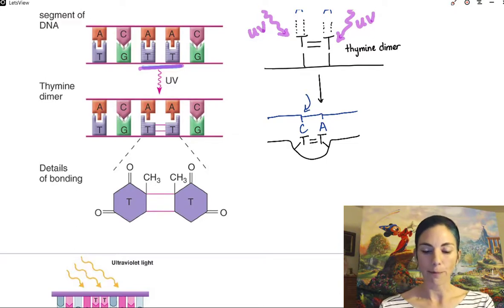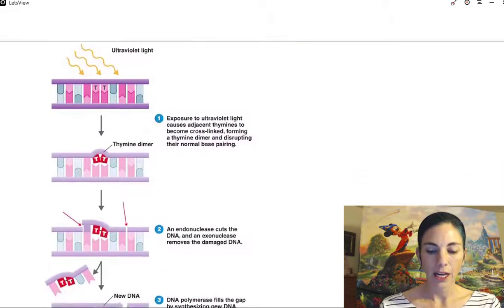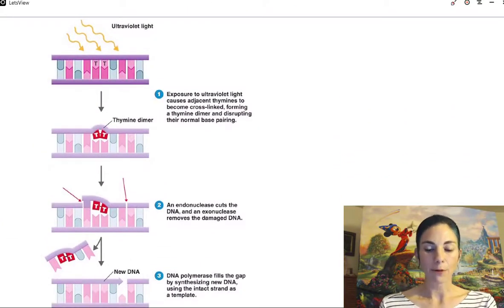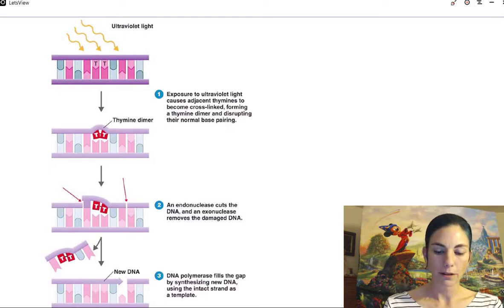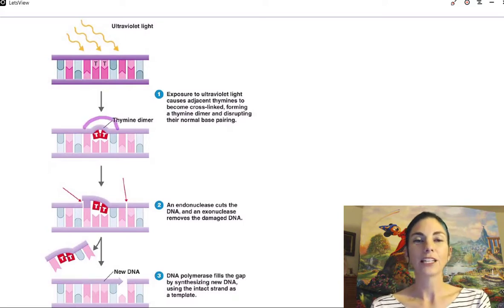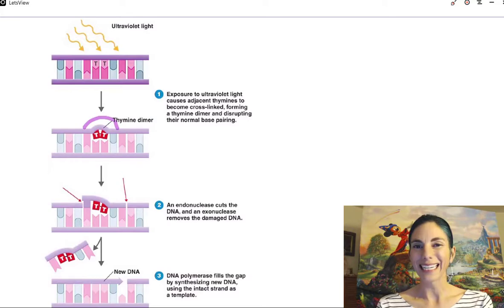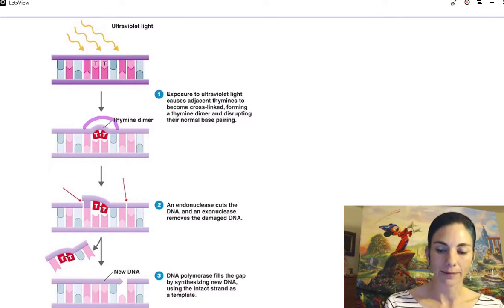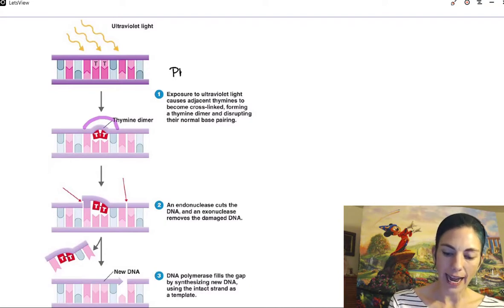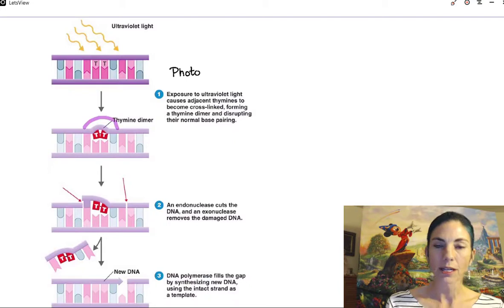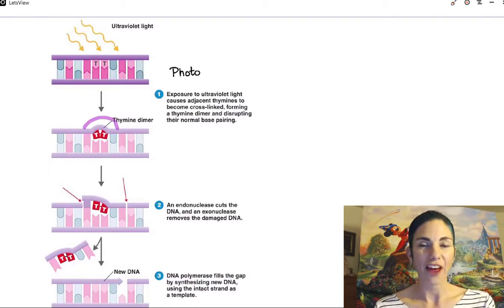So let's talk about that repair mechanism. The fact that thymine dimers cause a bulge is fortuitous because it gives us an easy way to find them. So there is an enzyme, kind of a correction enzyme, that E. coli has called photolyase.